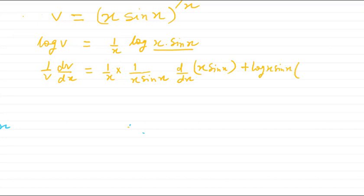Plus log(x·sin x) as it is, and the differentiation of 1/x will be minus 1/x². Now multiplying, it becomes (1/x²·sin x) times d/dx of (x·sin x). Again using the product rule: differentiation of x is 1, so we write sin x, then plus x·(−cos x), giving (sin x − x·cos x).